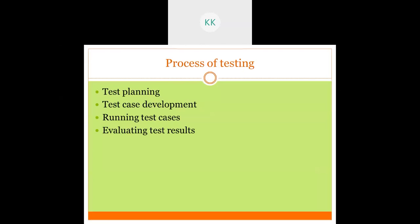The process of testing involves: test planning — we first plan the test cases; then test case development — we write the test cases, generally written by the developers or the analysts who analyze the software for specific requirements; then running the test cases; and finally evaluating the test results.